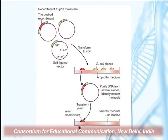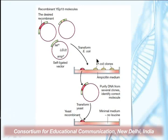In yeast cells, transformants can be selected on minimal media — positive growing colonies do not require amino acid in the medium because they can synthesize their own leucine due to presence of the leucine-2 gene. Recombinant plasmid selection and formation can be done in E. coli, but the final transformation and expression can be achieved in the yeast.